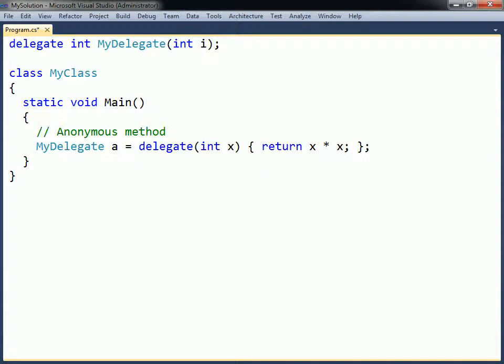C-sharp 2.0 also introduced anonymous methods, which can be assigned to delegate objects. An anonymous method is specified by using the delegate keyword, followed by a parameter list and a method body.